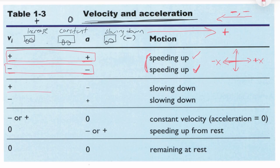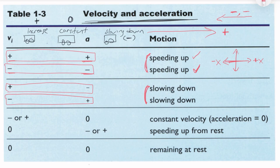But if the acceleration and velocity carry opposite signs, the object is slowing down. Keep this in mind — it can be useful. If acceleration and velocity have the same sign, the object is speeding up. If acceleration and velocity have opposite signs, the object is slowing down.